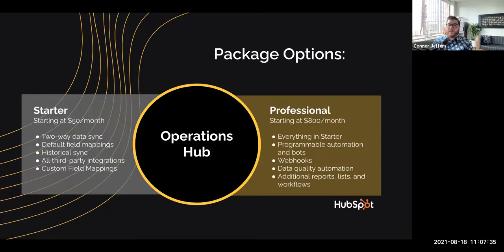The next package is the Professional tier at $800 a month. That's really going to expand things and let you use programmable automation, extend your workflow functionality, code directly in your workflows, trigger webhooks, and a lot of additional functionality on the professional side. We're going to talk through all of the above.